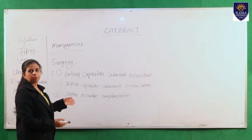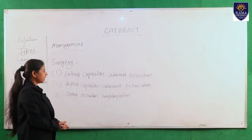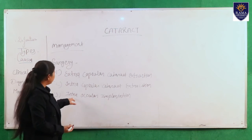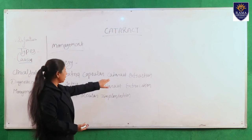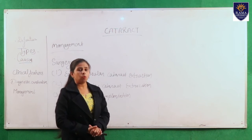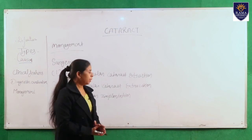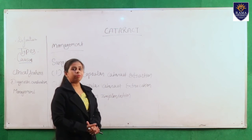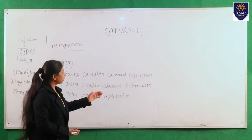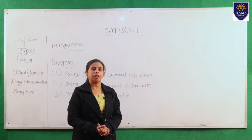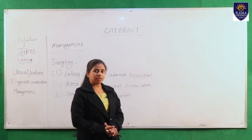Many surgical procedures are used. First is extracapsular cataract extraction — we remove the lens and the anterior portion of the capsule. Second is intracapsular cataract extraction — we remove the entire lens and capsule. Third is intraocular implantation — after removing the entire lens, a new healthy lens is implanted.